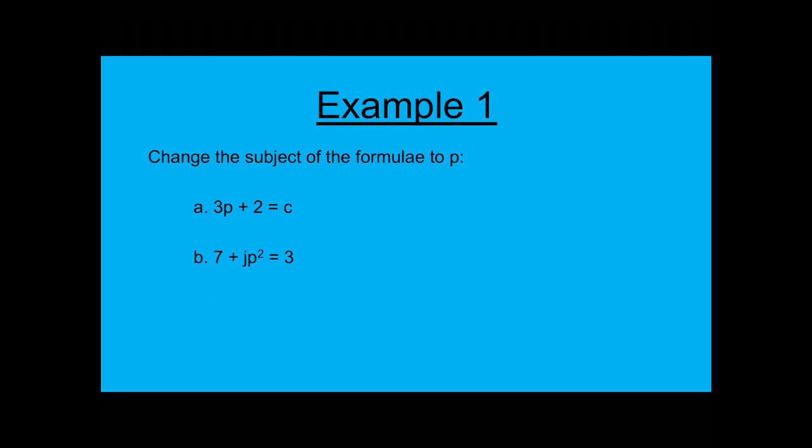Example 1. Change the subject of the formula to P. Part A: 3P add 2 equals C. Part B: 7 add JP squared equals 3.